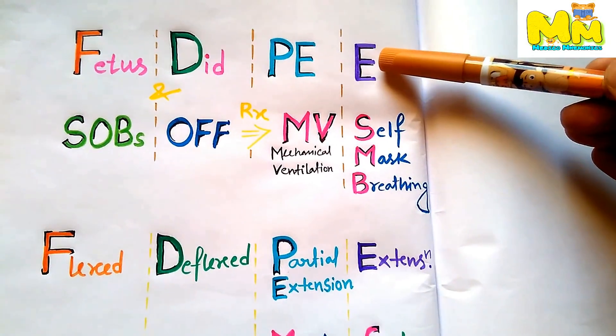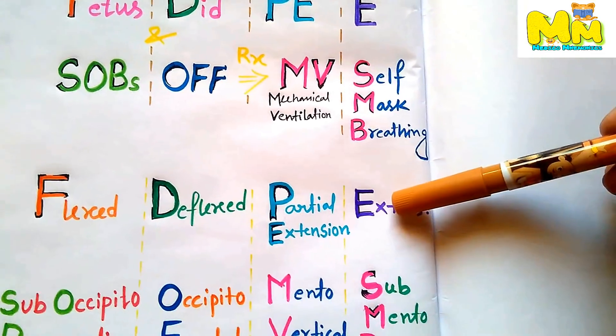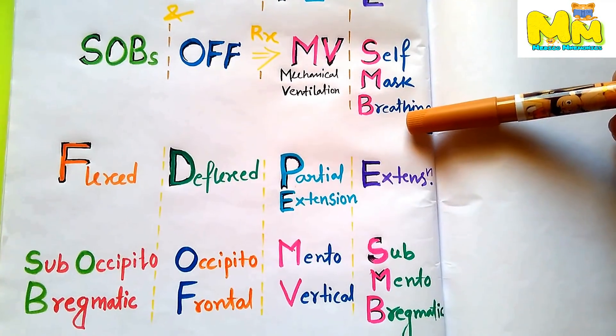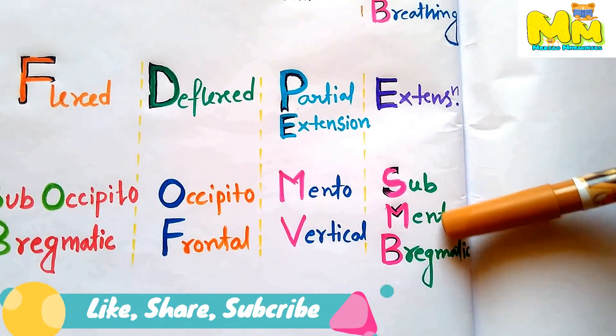When E is left behind, E for extension and self mask breathing SMB, so submentovertical.